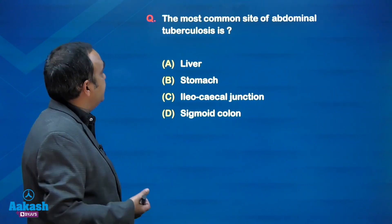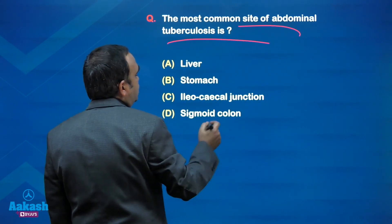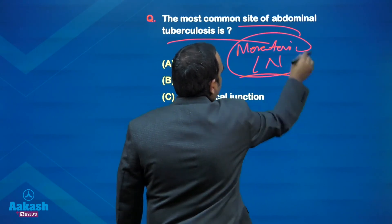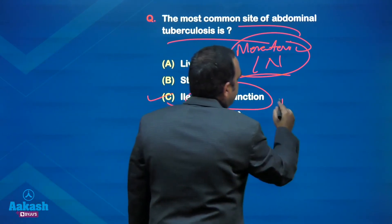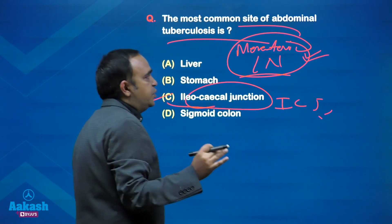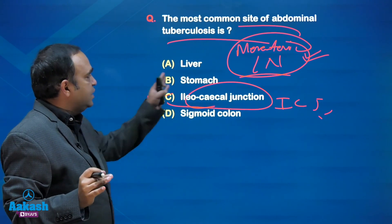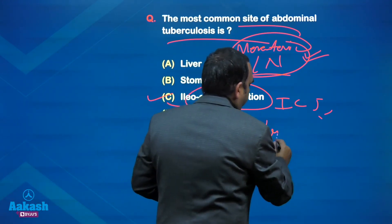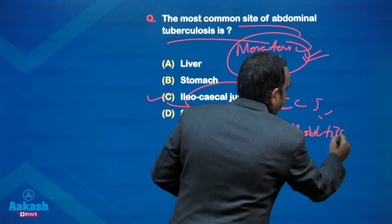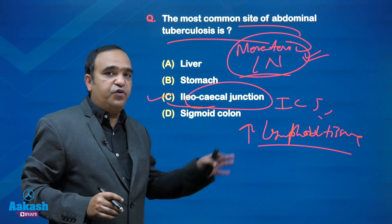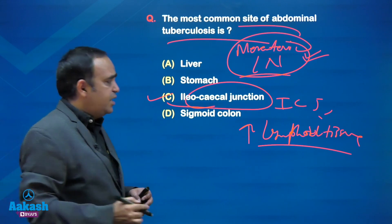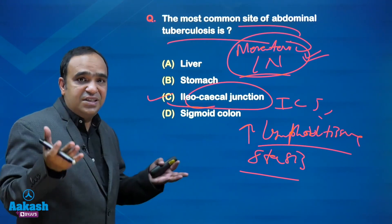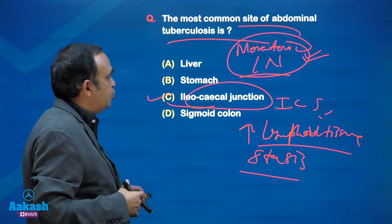This next point is straightforward. The most common site of abdominal tuberculosis overall is the mesenteric lymph nodes. But in the bowel, the most common site is the ileocecal junction. The reason is the abundance of lymphoid tissue in the terminal ileum, plus relative stasis because of the ileocecal valve, causing delay in transit - which makes it a favorable site for tubercular infection.